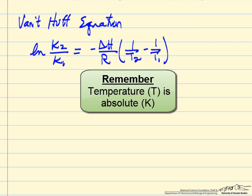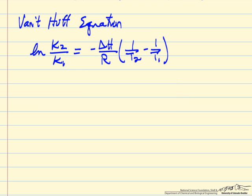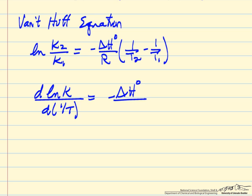So with just two data points we could calculate delta H. If we want to be more accurate and use the three data points, we could use the form that this equation was derived from, and we should say it's standard conditions.